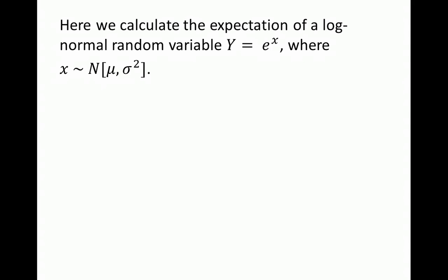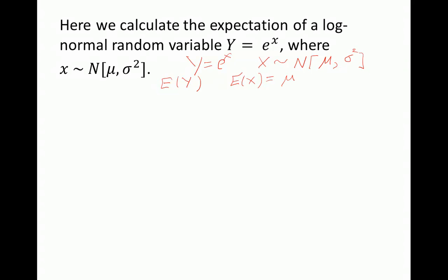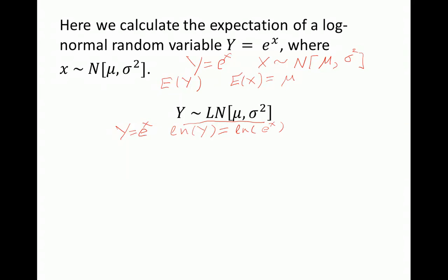Suppose we have a random variable y which equals e to the power of x, where x is a normally distributed random variable with mean mu and variance sigma squared, and we're interested in the expectation of y. Y here is log-normally distributed because y equals e to the power of x, and if we take the natural log of y, that equals x. So the natural log of y is normally distributed with mean mu and variance sigma squared.